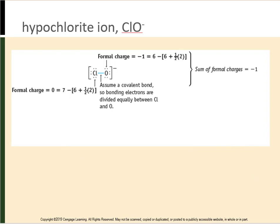Consider the hypochlorite ion. Looking at oxygen to find its formal charge: oxygen has 6 valence electrons. Subtracting 6 lone pair electrons plus half of 2 bonded electrons gives 6 + 1 = 7. So 6 minus 7 gives a formal charge of −1 for oxygen. Now looking at chlorine: chlorine has 7 valence electrons. With 6 lone pair electrons and 1 bond, half of 2 is 1. So 6 + 1 = 7, and 7 minus 7 = 0. There is a zero formal charge on chlorine and −1 on oxygen.